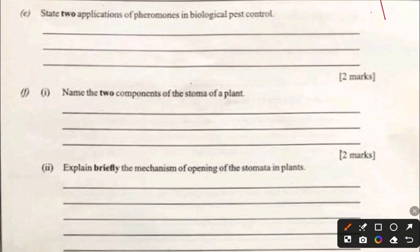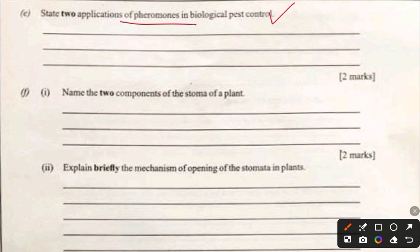State two applications of pheromones in biological pest control. First, pheromones are used in disruption of mating systems — when a particular area is flooded with a specific pheromone, it confuses male insects and prevents them from locating females, helping to reduce population rates. Second, pheromones are used for monitoring, where traps baited with pheromones attract specific pests, allowing farmers to monitor population and determine the need for intervention.